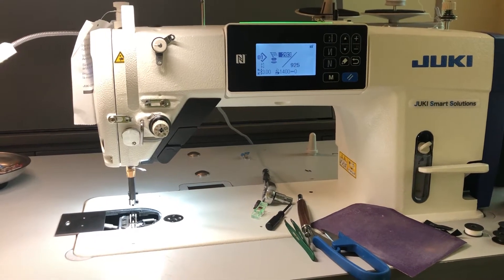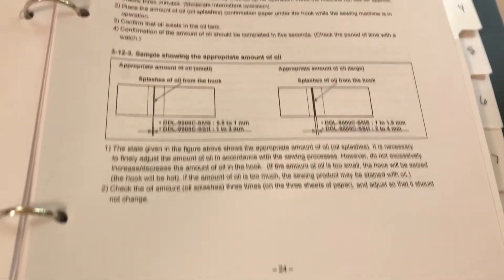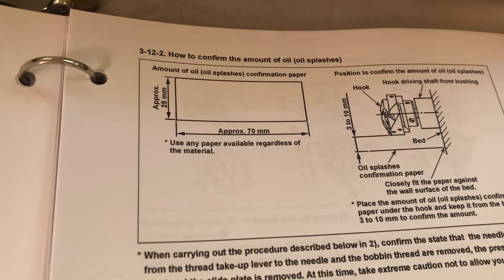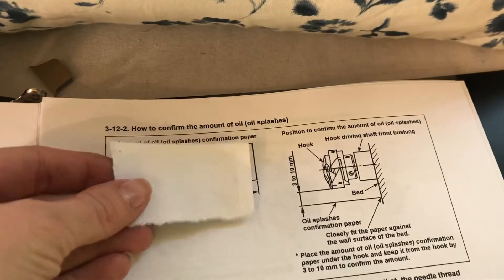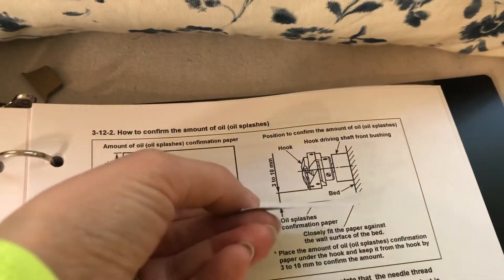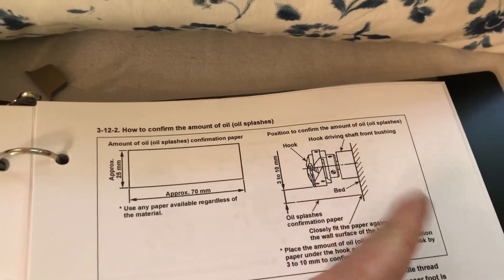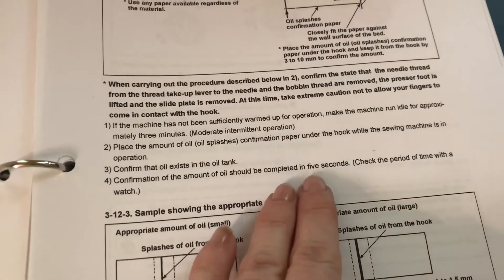So I wanted to check how much oil was actually going to the hook. In the manual you'll see on page 24 it says how to confirm the amount of oil or the oil splashes around the hook. They basically want you to get a piece of paper about that size, put it underneath the hook up against the back of the machine here, and run it. It says to run it for five seconds.